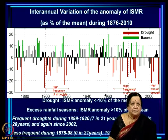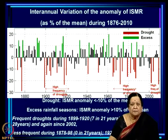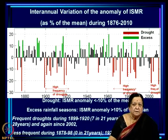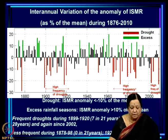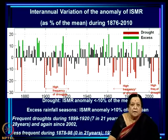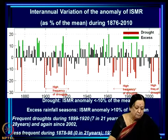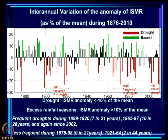What we see here is the inter-annual variation of the anomaly of ISMR — the actual ISMR in any year minus the long-term mean, expressed as a percentage of the mean, during 1876 to 2010. We define extremes as those years in which the anomaly of ISMR has magnitude more than 10 percent, or more than one standard deviation. If there is a deficit larger than 10 percent it is a drought; if the anomaly is greater than +10 percent it is an excess rainfall season. Droughts are marked in red, excess rainfall seasons in green.